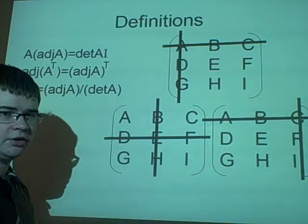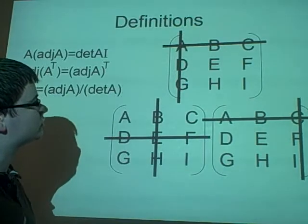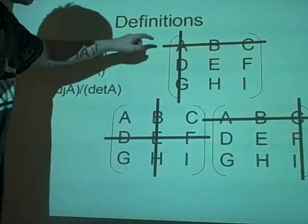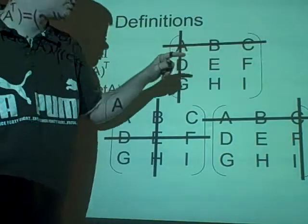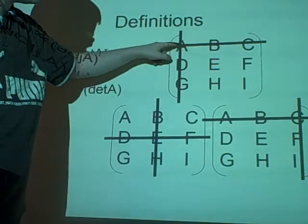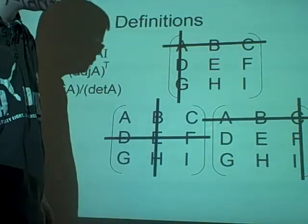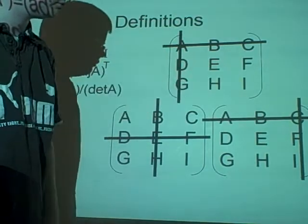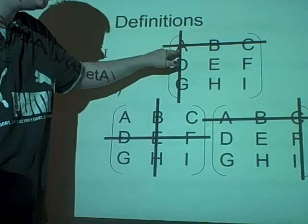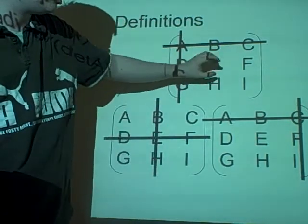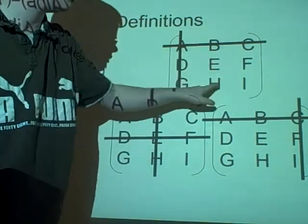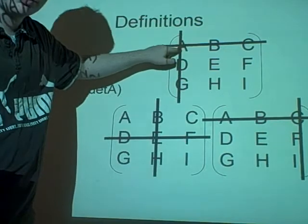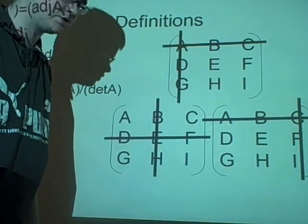This is a demonstration of how to find the different parts of the adjoint matrix. We start off with our matrix and cross off a row and a column. We've crossed off the point A completely — twice — so the point we've crossed off is the one we are finding. After we cross off, we find the determinant of all the remaining values. So we have the determinant of E, F, H, I, which is EI minus FH. That gives us the value for point A in our new adjoint matrix.